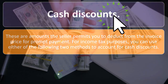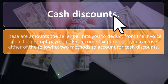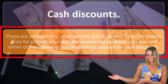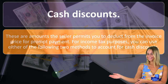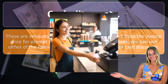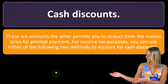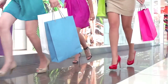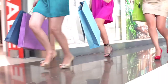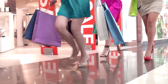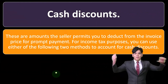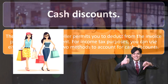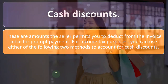Cash discounts are amounts the seller permits you to deduct from the invoice price for prompt payment. These arise usually with larger transactions or higher volumes, and they are a cash management strategy. The discounts are usually very small — if you buy something on account and must pay within 30 days, the seller might give you a small discount to pay within 10 days instead.